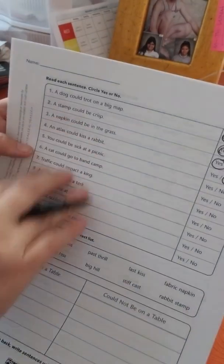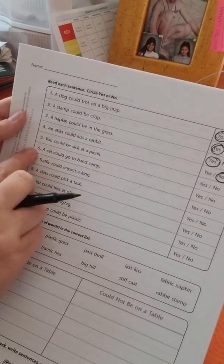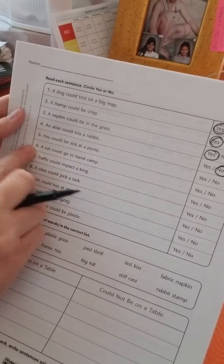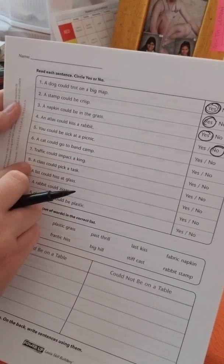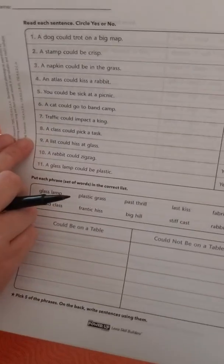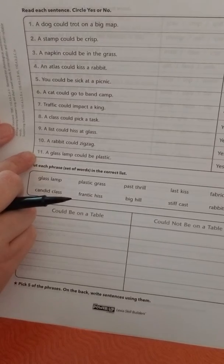So you're going to answer the rest of these on your own. You could be sick at a picnic. A cat could go to band camp. Traffic could impact a king. A class could pick a task. A list could hiss at glass. A rabbit could zigzag. A glass lamp could be plastic.